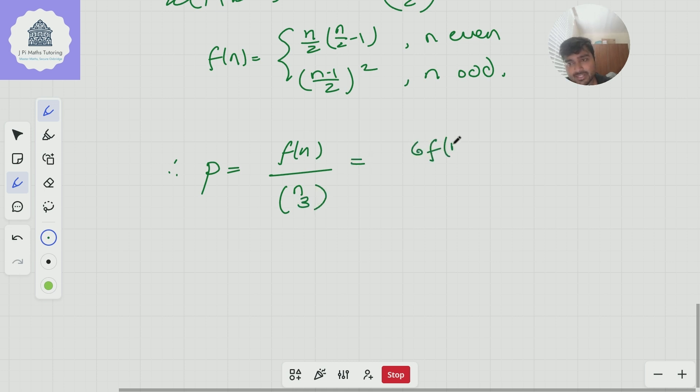And we can maybe simplify that to six f of n over n, n minus one, n minus two like so. And that there would be our final answer.